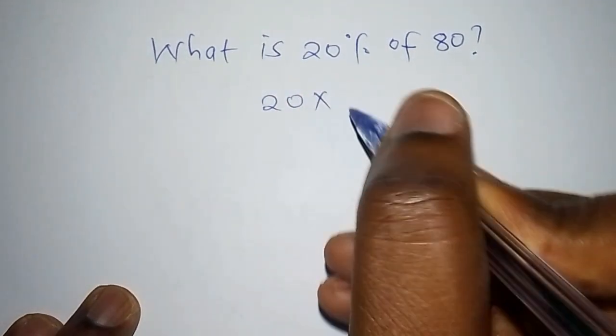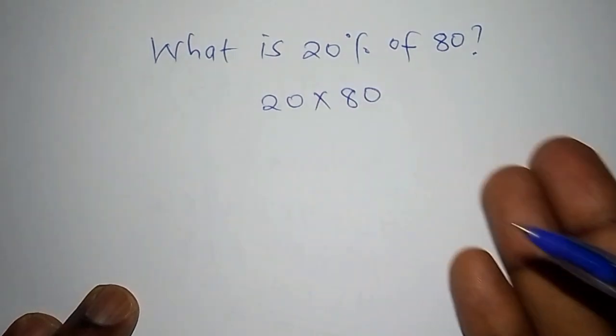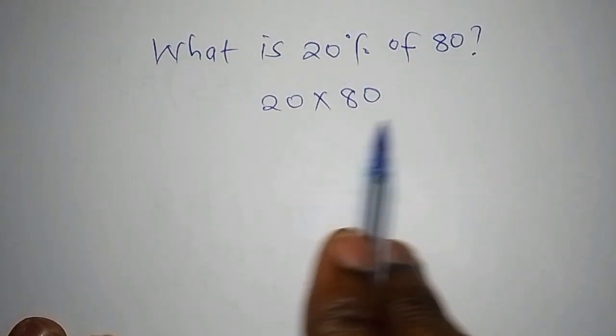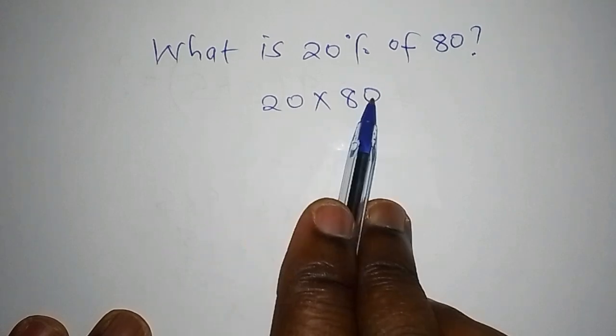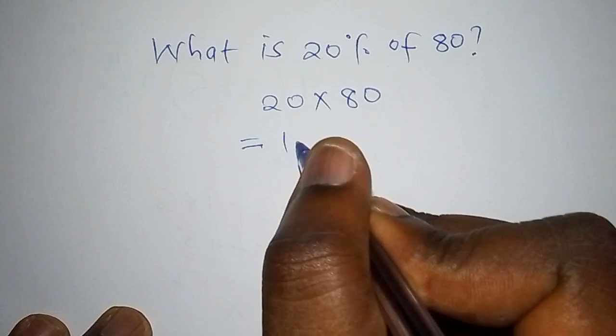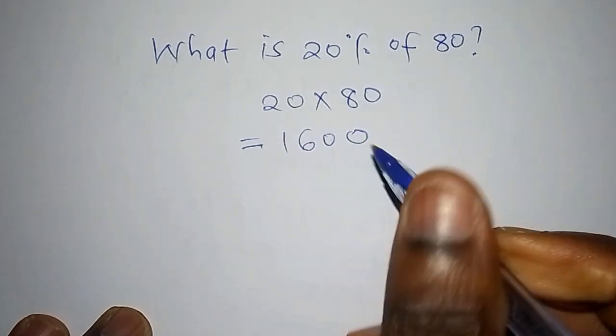Because 'of' simply means multiplication, once you move to this part you just take 20 multiplied by 80. Now when you take 20 multiplied by 80, we shall get the answer as 1600.